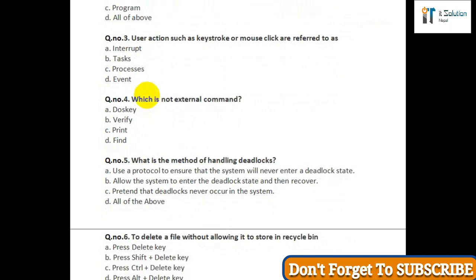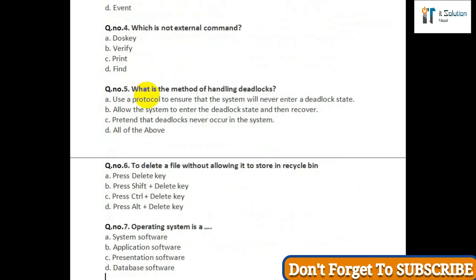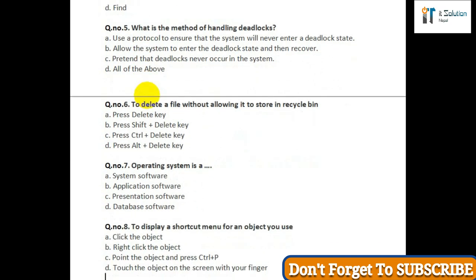Question number six: To delete a file without allowing it to store in the recycle bin — option A: press delete key; option B: press C plus delete key; option C: press Ctrl plus delete key; option D: press Alt plus delete key. Question number seven: Operating system is — option A: system software; option B: application software; option C: presentation software; option D: database software.